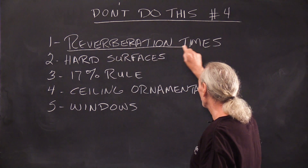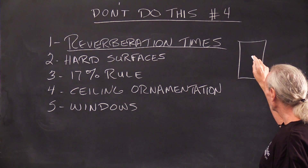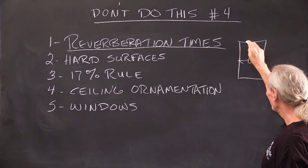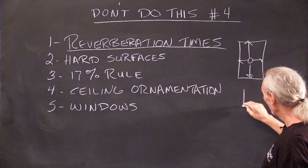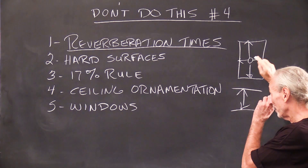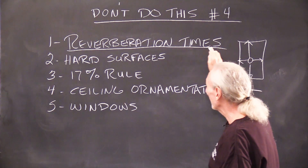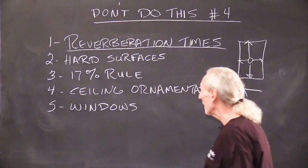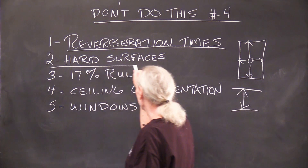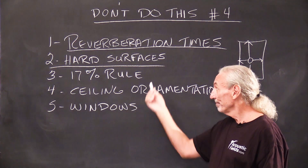Our biggest problem is always going to be reverberation times. What are reverberation times? It's the reflections off of the wall surfaces, the floors, and the ceilings. We have all of these reflections that when we add them all up, we get a number called reverberation time. And the biggest contributor to that is all the hard surfaces this room has.